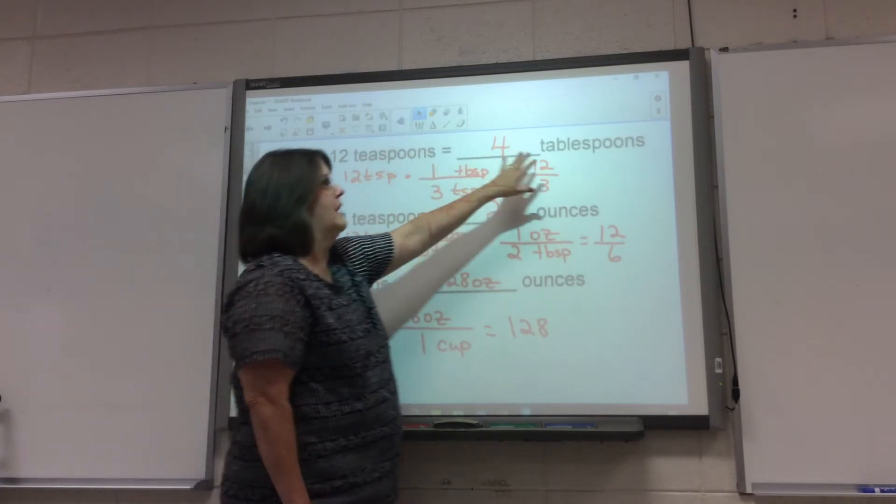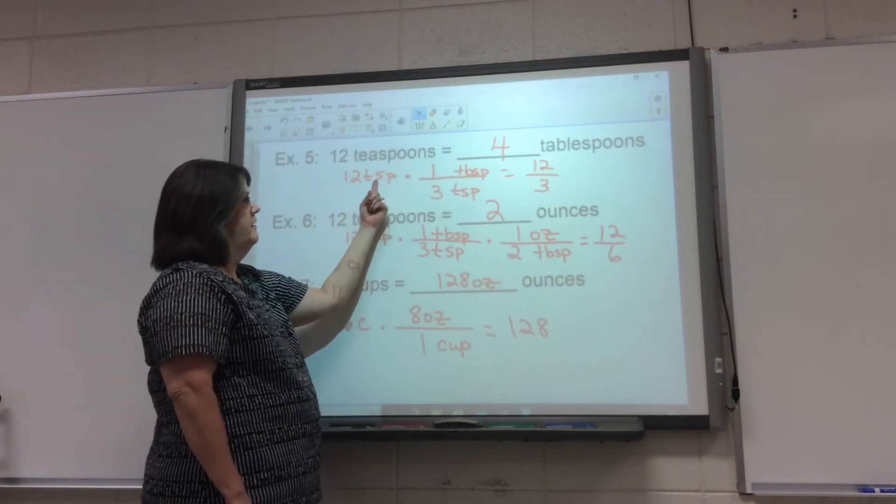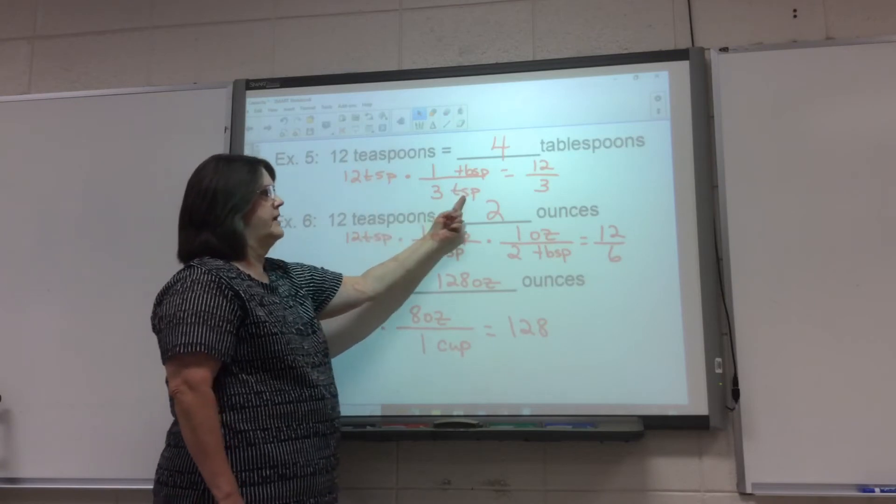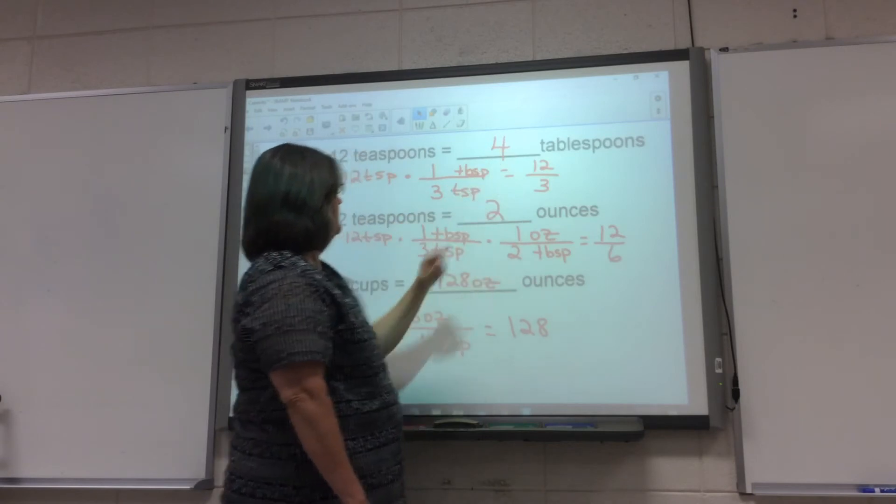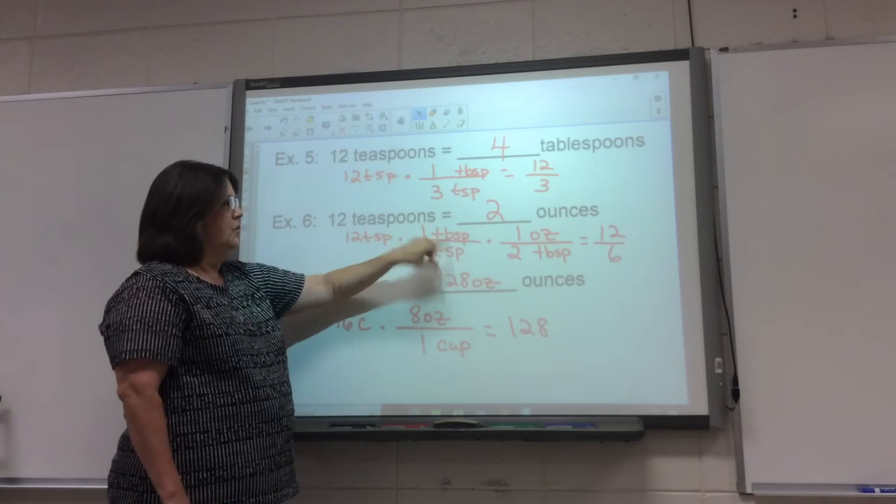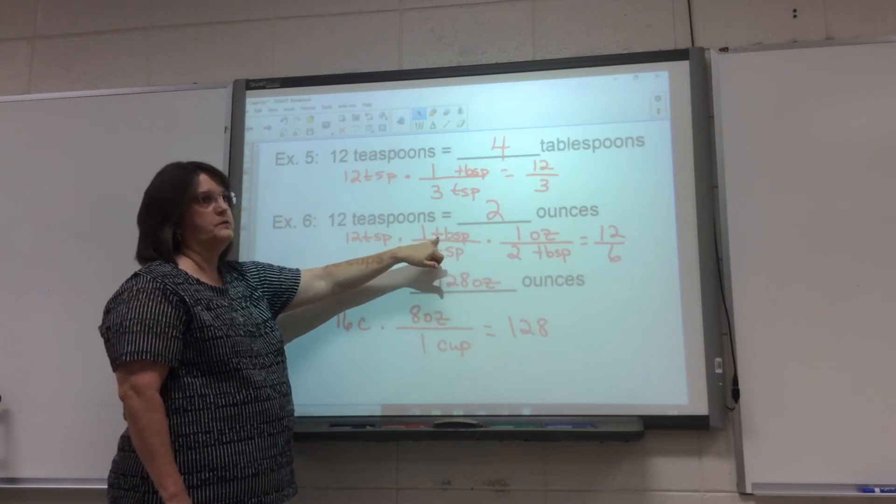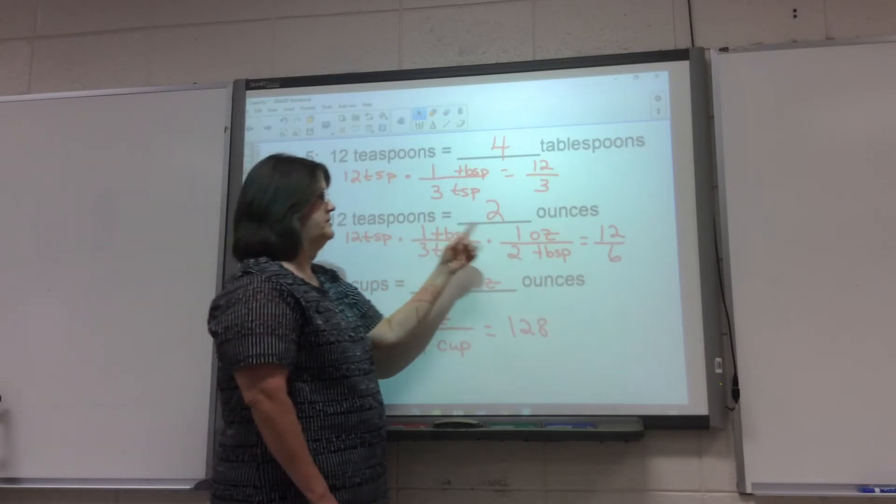Okay, all right. If I'm starting with 12 teaspoons and I want to go to tablespoons, there are three teaspoons in a tablespoon. Remember, if teaspoons is here, it goes in the denominator here. So 12 over three is four. 12 teaspoons is how many ounces? So three teaspoons in a tablespoon. Again, teaspoons is here, so teaspoons is here, tablespoons is here, so I write tablespoons here. There's two tablespoons in one ounce.